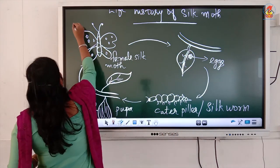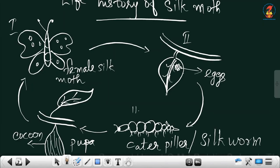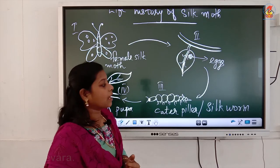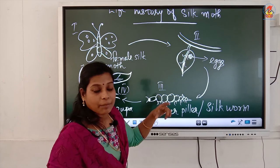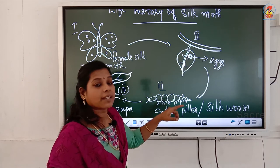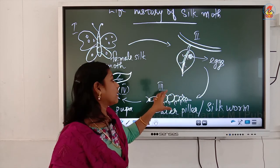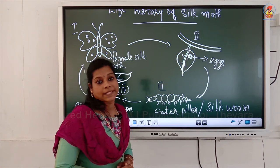Now children, stage one is the first figure, the second figure, the third figure, and the fourth figure. You have to draw them one by one and connect them as a cycle, so that it shows the life cycle of the silk moth repeating. When you write in your notes, the rough figure shown in this video is what you have to draw. This is the life history of silk moth.